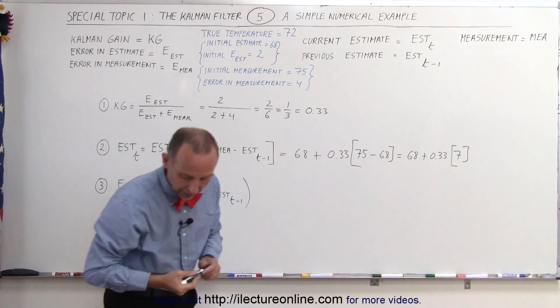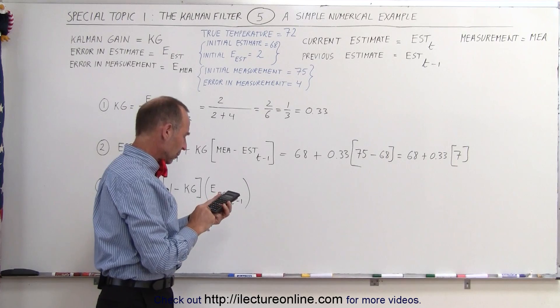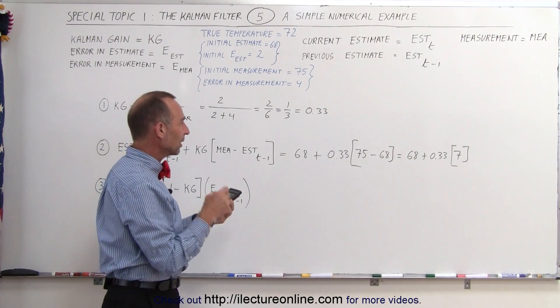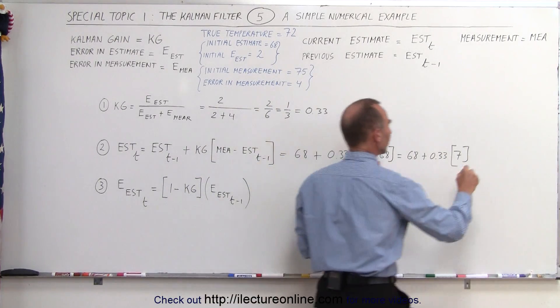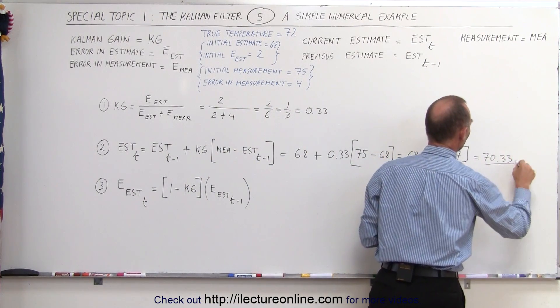All right, for that we need a calculator. We usually keep about two decimal places, so we go 7 divided by 3, that gives us 2.33, added to 68, which gives us 70.33. So there we have our new estimate.